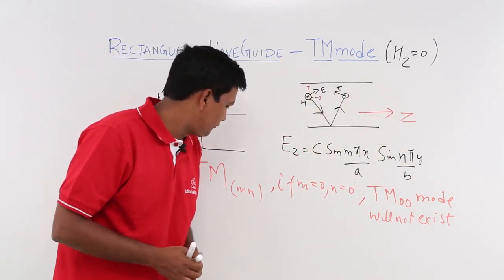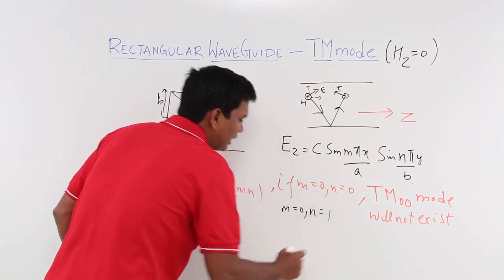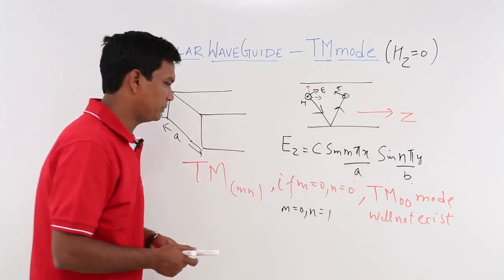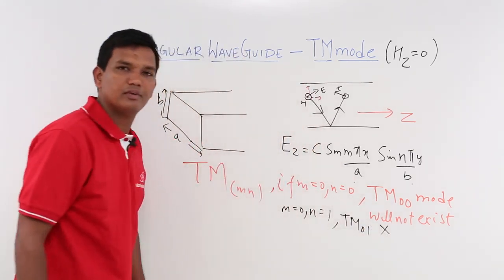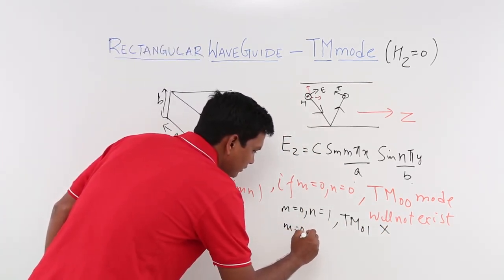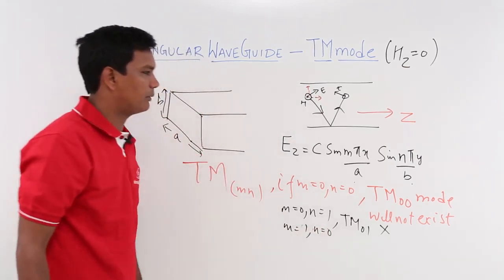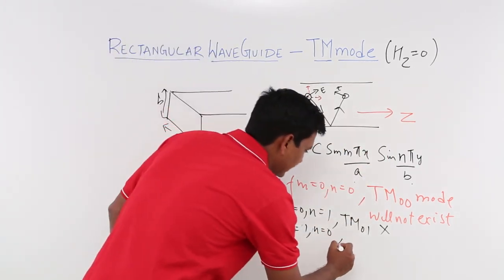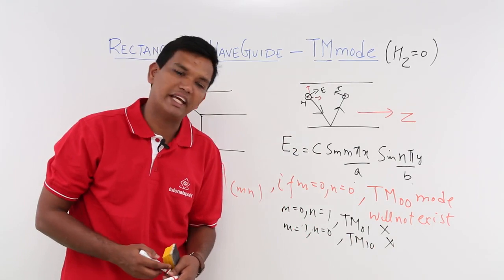This is clear. If m is equal to 0 and n equal to 1, what will happen? Again, if you substitute m equal to 0, this quantity goes to 0, so the whole thing goes to 0. It means TM(0,1) again will not exist. What about m equal to 1 and n equal to 0? Again this quantity goes to 0, so the whole thing goes to 0. Again, TM(1,0) will not exist. This mode will not exist.